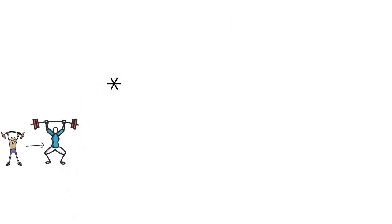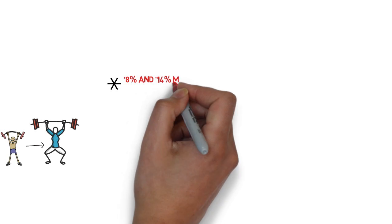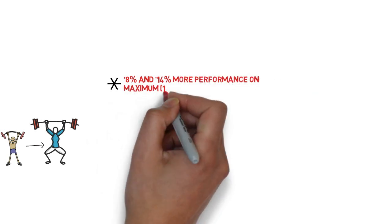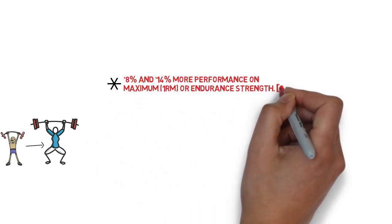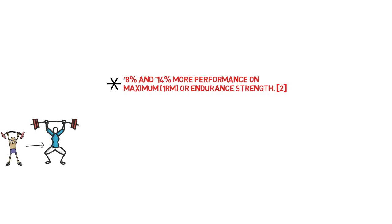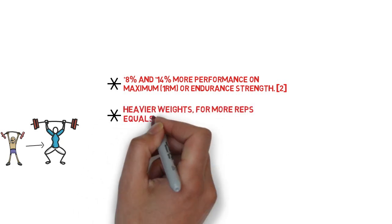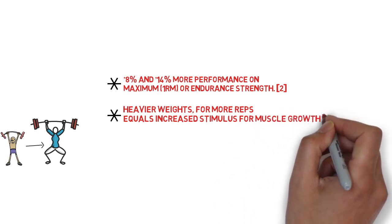Evidence for the first point comes from a 2003 study which showed individuals ingesting creatine combined with resistance training obtained on average 8% and 14% more performance on maximum (i.e. one rep max) or endurance strength (i.e. maximum repetitions at a given percent of one rep max) than the placebo groups.